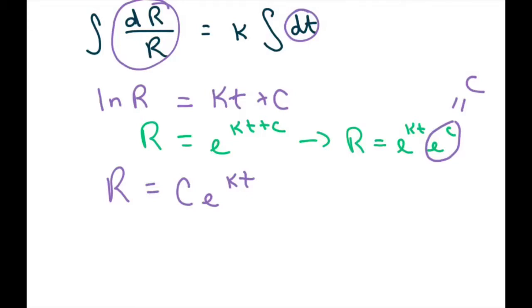So we first solve for c by plugging in the information that the radius is 4 initially. So initially the radius was 4. So we get 4 equals c e to the k times 0, which is just 0. Anything to the 0 is 1. So you get 4 equals c.